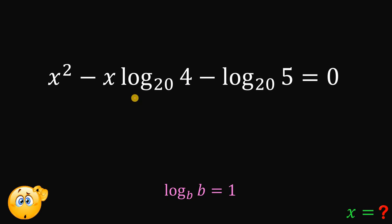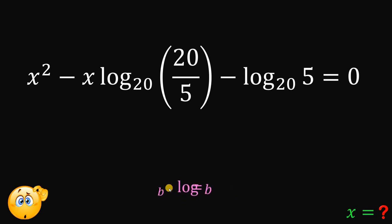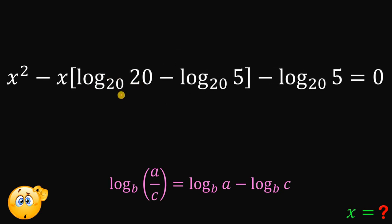We have a quadratic equation involving logarithm. This is hard to factor directly, but notice that 4 can be rewritten as 20 over 5. Using the logarithm quotient rule again, logarithm of 20 over 5 to the base 20 equals logarithm of 20 to the base 20 minus logarithm of 5 to the base 20. And since logarithm of 20 to the base 20 equals 1, we substitute that in.